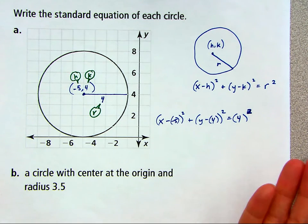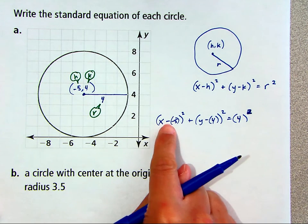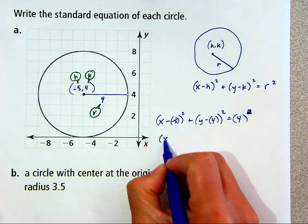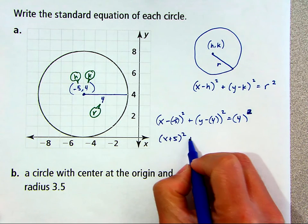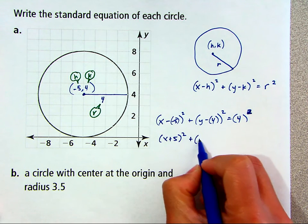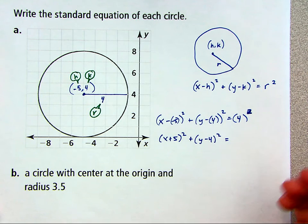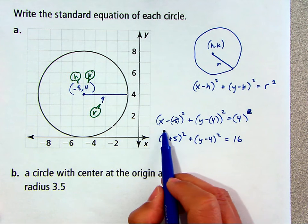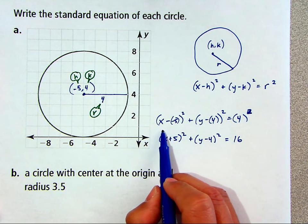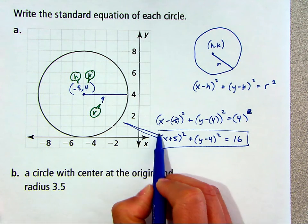Technically, you could leave it like that. But if we just want to clean things up, x minus negative 5 is the same as x plus 5. So that's the first term in the equation. And then y minus 4 squared is the next term. And then we can leave this as 4 squared or you can write it as 16. Either way is fine. So that is the equation of that circle there.